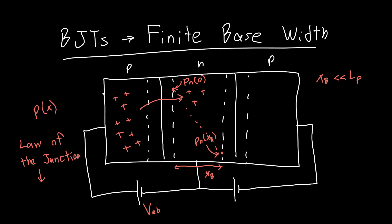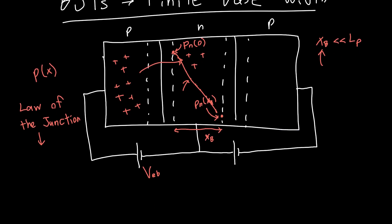But in general, that's not going to be true, right? So XB might have some finite value. We might not be able to make it as small as we want. So the hole concentration isn't going to just look like this straight line. It's going to look like something a little more complicated.